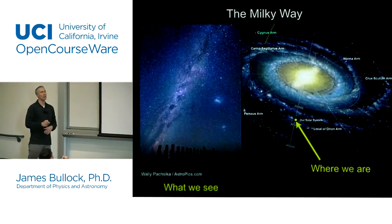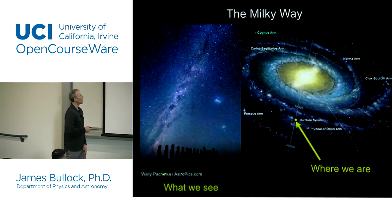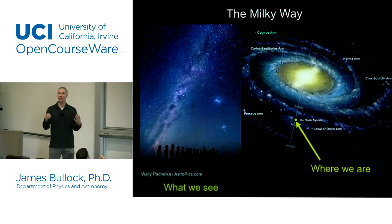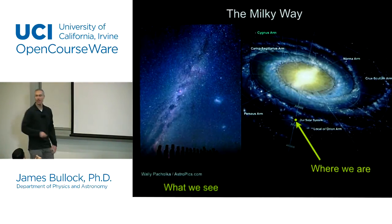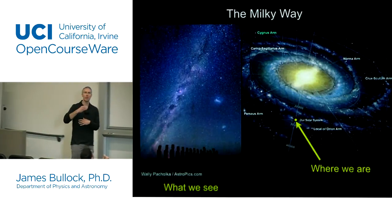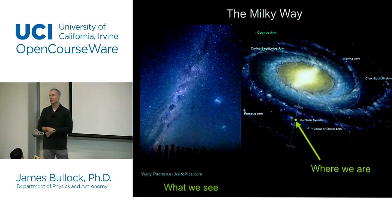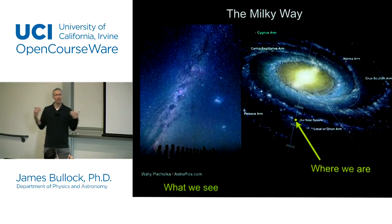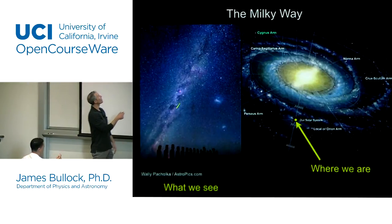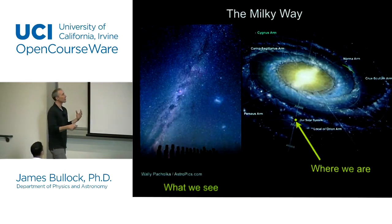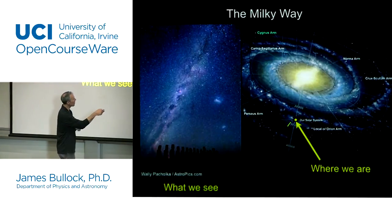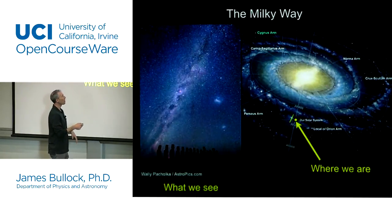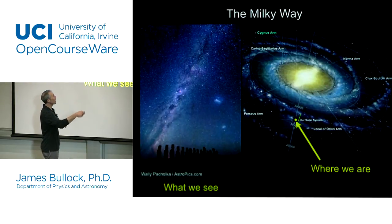Here's another really awesome image of the Milky Way, taken from Easter Island. I love this because you see these ancient statues in the foreground, and you can imagine people living on Easter Island a thousand years ago looking up and seeing a night sky not that much different than this. Because Easter Island is in the southern hemisphere, you can also see these Magellanic Clouds. When we look up into the sky at night and it's dark and clear enough, we see a band like this.